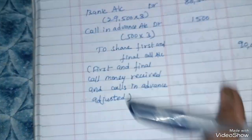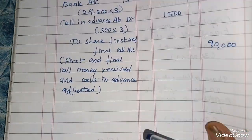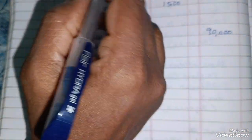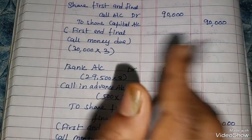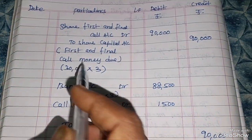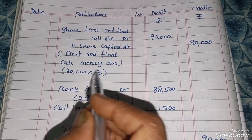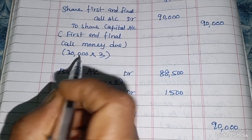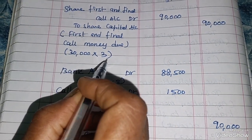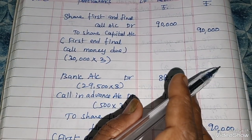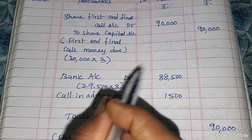Share First and Final Call Account Dr. to Share Capital Account. First and final call money due entry: 30,000 × 3 = 90,000.